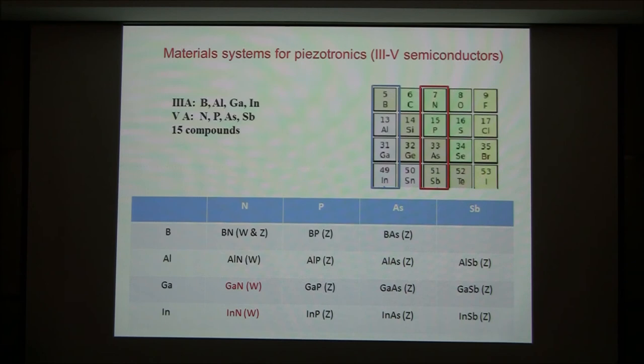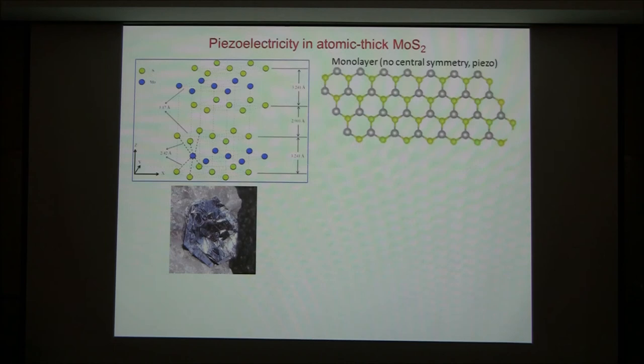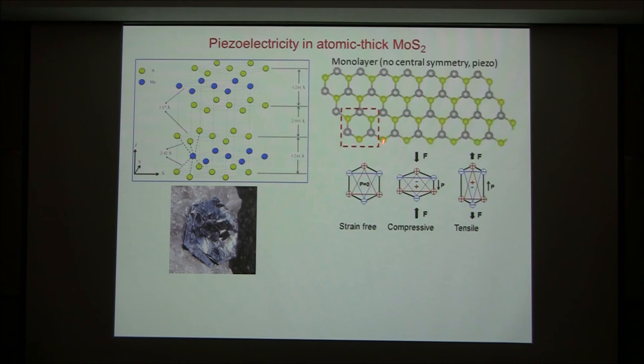I want to show you one more case — 2D materials. Molybdenum disulfide (MoS₂) can have both a piezoelectric and a piezotronic effect. If you look at the structure, for a single atomic layer, the unit cell — the centers of cations and anions overlap at rest. When you stretch or compress it in one direction, the centers of cations and anions polarize, giving you piezoelectricity.